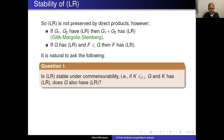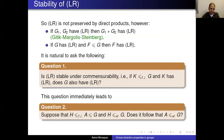A natural question is whether LR is stable under commensurability: if K has finite index in G and K has LR, does G also have LR? This leads to a related question: if H has finite index in A and H is a virtual retract of G, does it follow that A is a virtual retract of G — can virtual retractions be lifted to finite index overgroups?